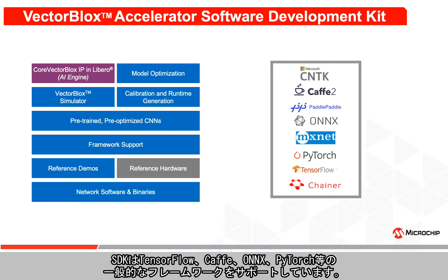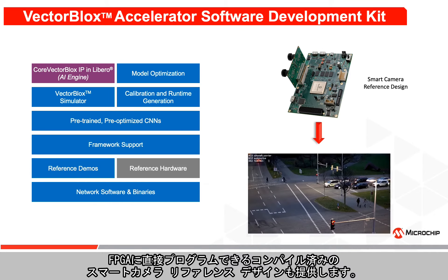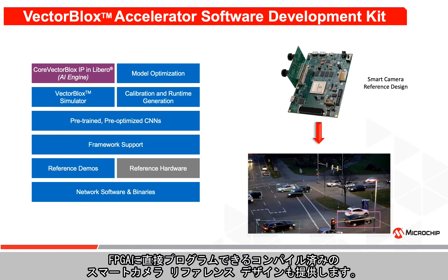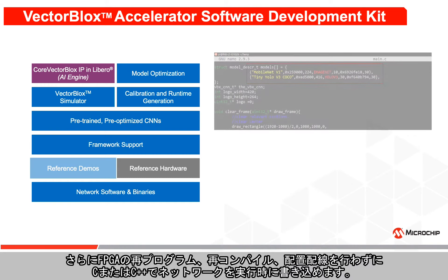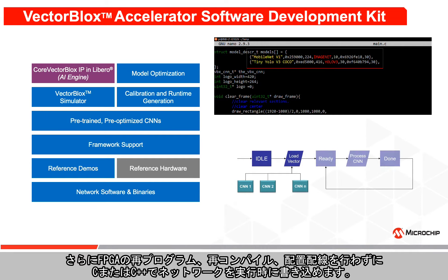ONNX, and PyTorch, among others. A pre-compiled smart camera reference design is provided along with the SDK which can be directly programmed into the FPGA. Finally, the networks can be loaded on the fly using C or C++ programming without the need to reprogram, recompile, or place and route the FPGA.